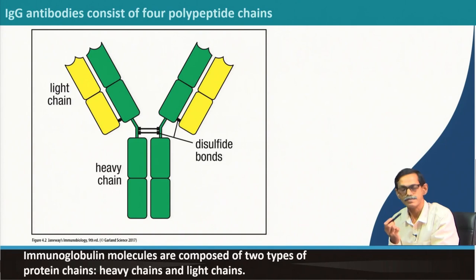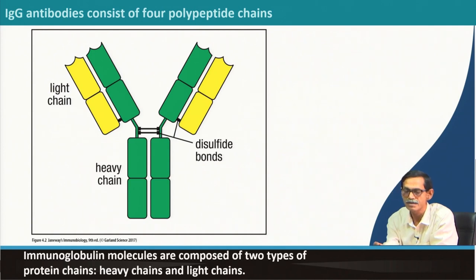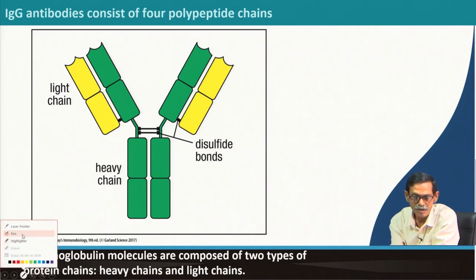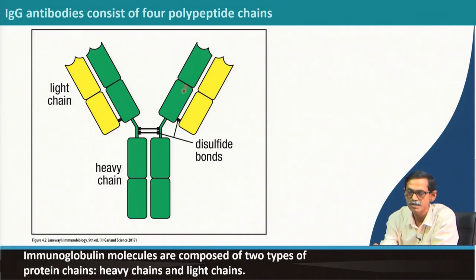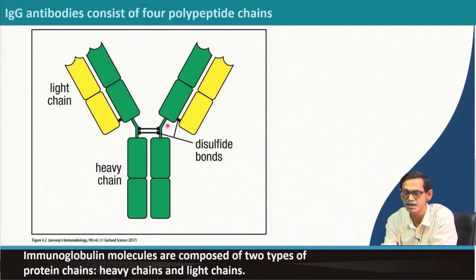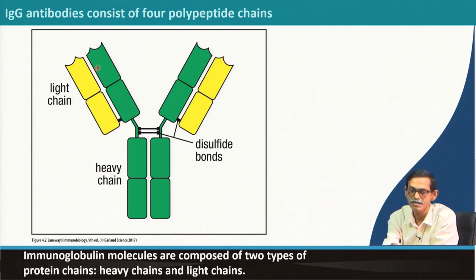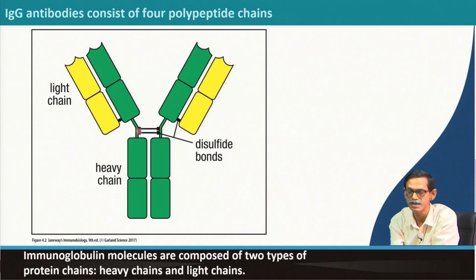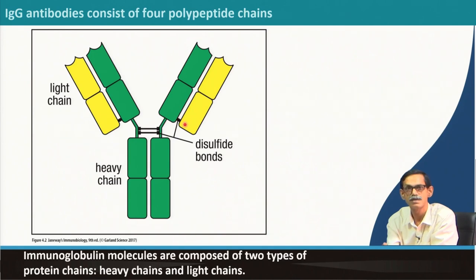In an antibody there are two types of polypeptide chain: the big one shown in green, which is the bigger one, and another smaller one shown in red. The big chain we call the heavy chain and the small chain we call the light chain, depending on molecular weight. The two heavy chains are connected by two disulfide bonds, and each heavy chain and light chain is connected by a disulfide bond.